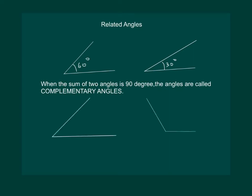Let us now look at another pair of angles. Say we have a 68 degree angle and a 112 degree angle. Now if we add 68 plus 112, we get 180 degrees. Such angles whose sum of measures is 180 degrees are called supplementary angles.